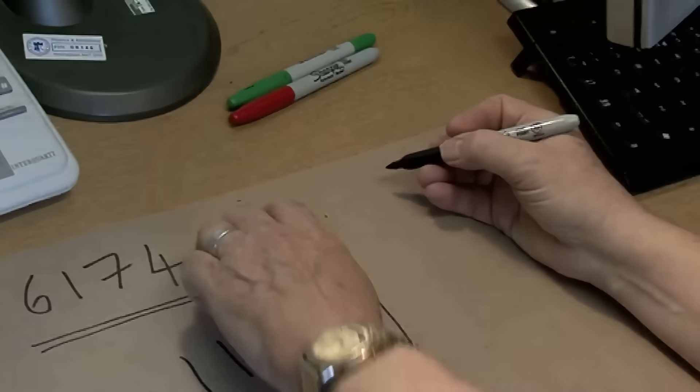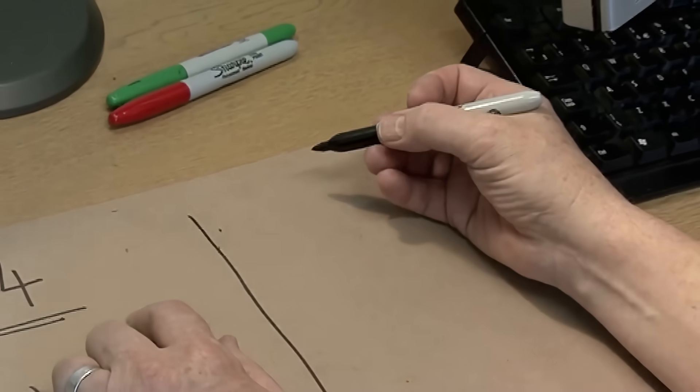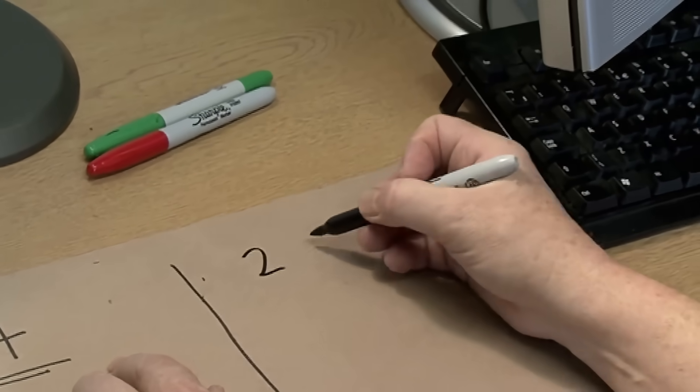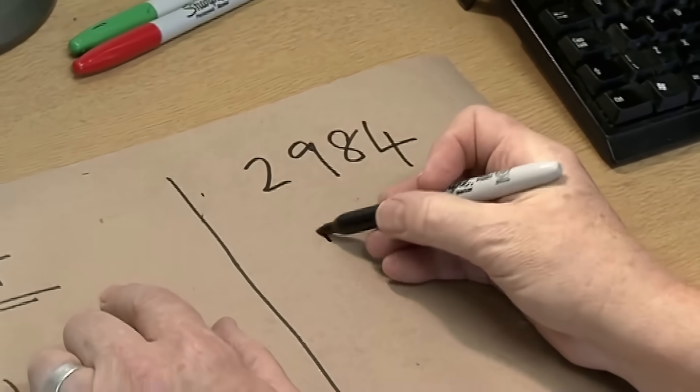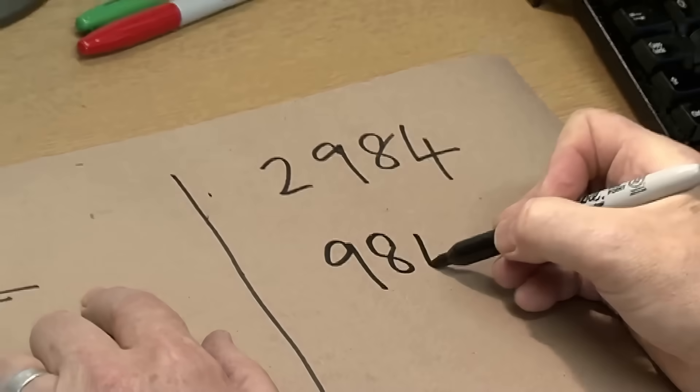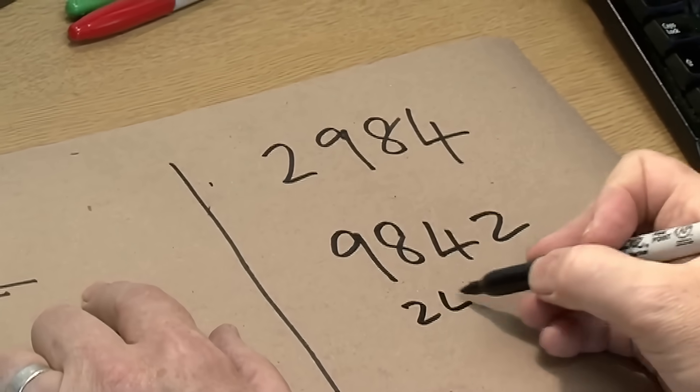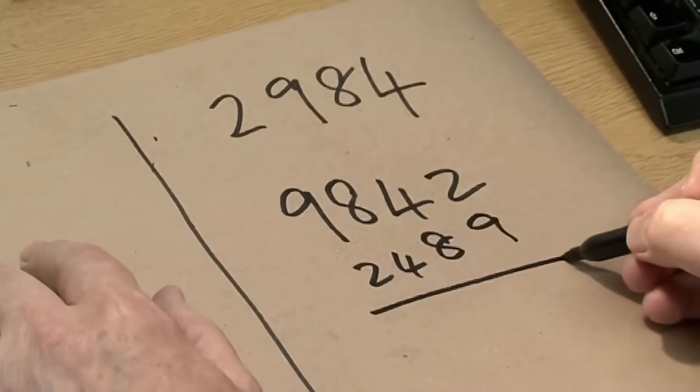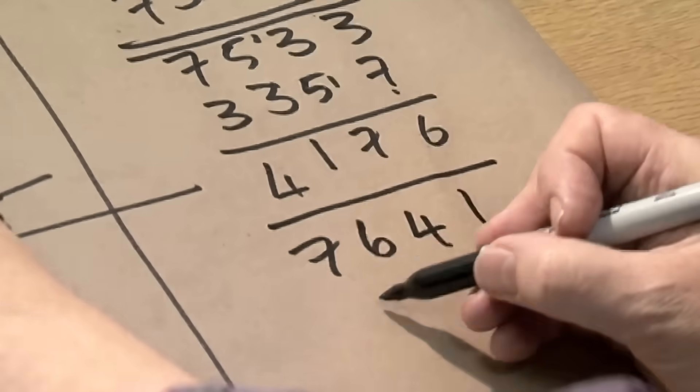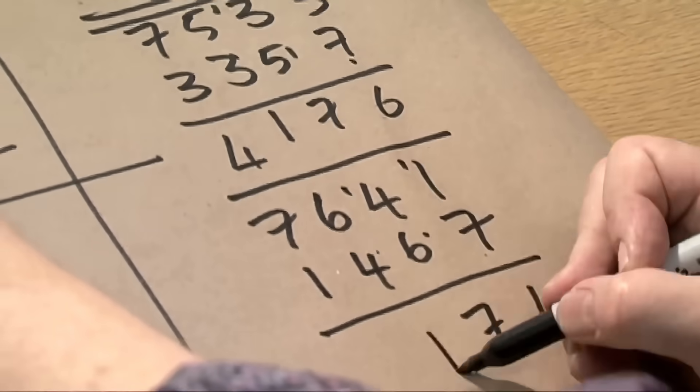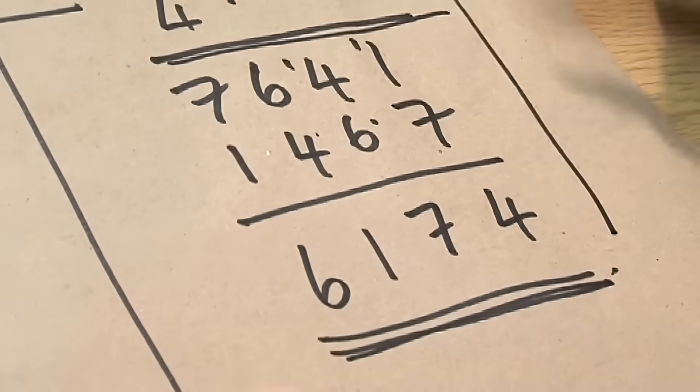I see you've got some spare room on your paper. I'm going to give you another random four-digit number, and let's see if it works. 2984. So I have to first put it in the order of the numbers, and then change them around, and take one away from the other. I've got the Kaprekar number in three goes.